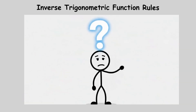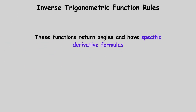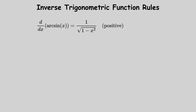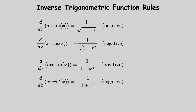Inverse trigonometric function rules: these functions return angles and have specific derivative formulas. For arc sine of x and arc cosine of x, use 1 divided by the square root of 1 minus x squared, with positive for arc sine and negative for arc cosine. For arc tangent of x and arc cotangent of x, use 1 divided by 1 plus x squared, with positive for arc tangent and negative for arc cotangent.